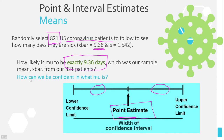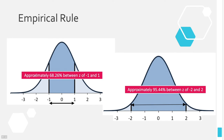Let's think about the empirical rule. It says 68% of our data values are within one standard deviation of the mean, so going one standard deviation left and right contains 68% of our data. However, 68% isn't quite as confident as we'd like. 95% is much more preferable. If you give four significant figures, the empirical rule gives 95.44%. And if we want exactly 95%, the corresponding z-score is 1.960, as we'll find out shortly.